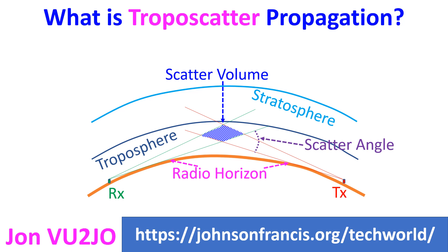Tropospheric Scatter Propagation is known in short as Troposcatter Propagation. The troposphere is the lowest layer of the atmosphere. Though Troposcatter is typical at microwave or Super High Frequency (SHF) band, it can also occur at VHF and UHF bands.